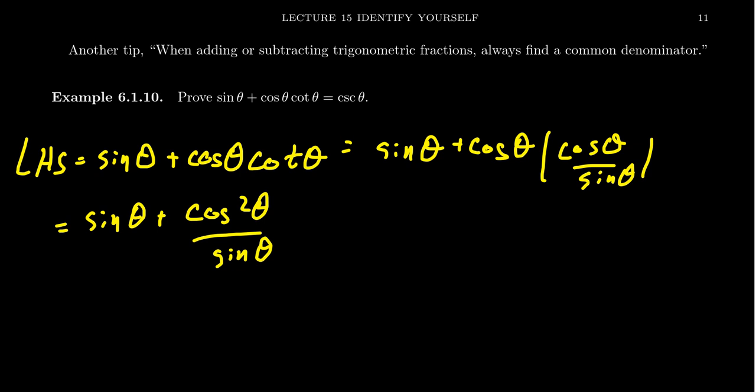So in the process of writing cotangent as cosine over sine, I introduce fractions in the problem. Well, how am I going to add those together? If I could have a common denominator, that would be very helpful.